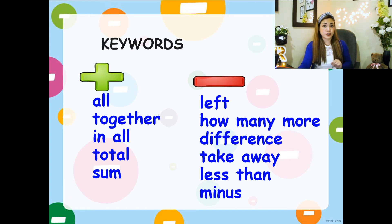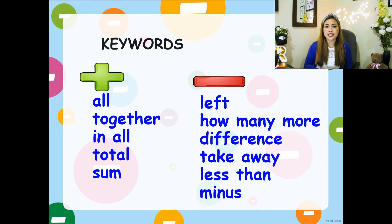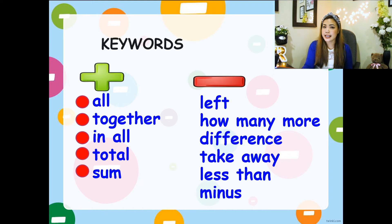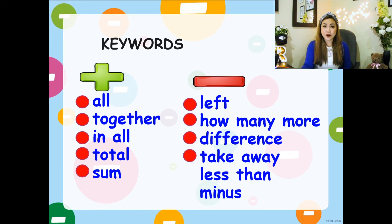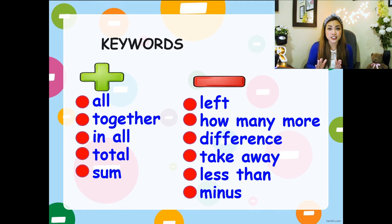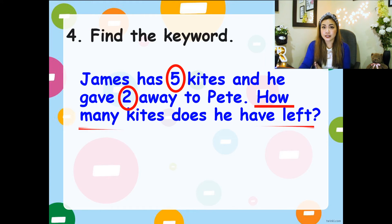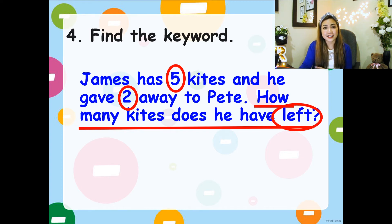Now we have to find the keywords — words that will tell you whether you're doing addition or subtraction. Addition keywords include: all, together, in all, total, and sum. Subtraction keywords include: left, how many more, difference, take away, less than, and minus. Going back to our word problem, the keyword is 'left,' so let's solve it.